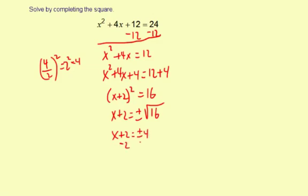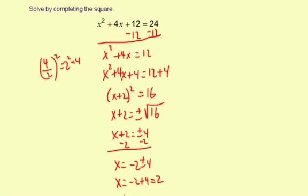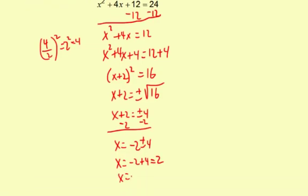Now subtract 2 from both sides. x equals negative 2 plus or minus 4. So there are two answers — I'll split them up. x equals negative 2 plus 4, which is 2, and x equals negative 2 minus 4, which is negative 6.